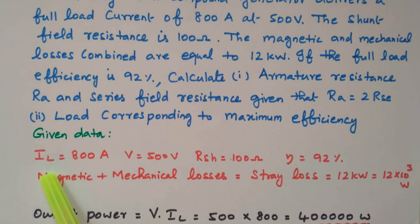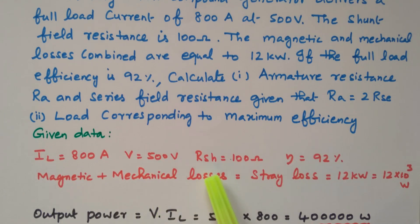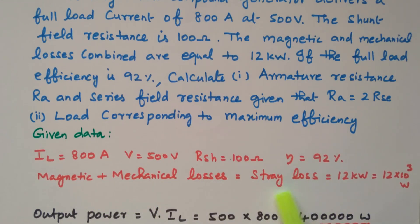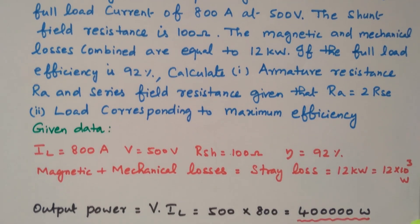The given data: load current IL = 800 ampere, terminal voltage V = 500 volts, shunt field resistance RSH = 100 ohm, efficiency = 92%, and magnetic and mechanical loss (stray loss) = 12 kilowatt, that is 12 × 10³ watts.